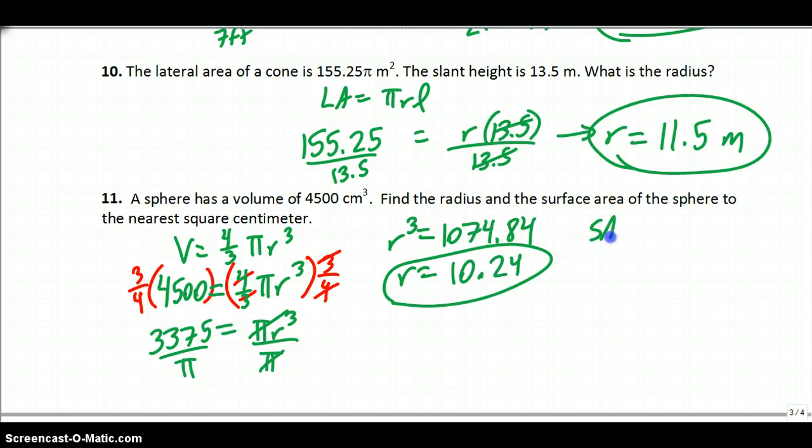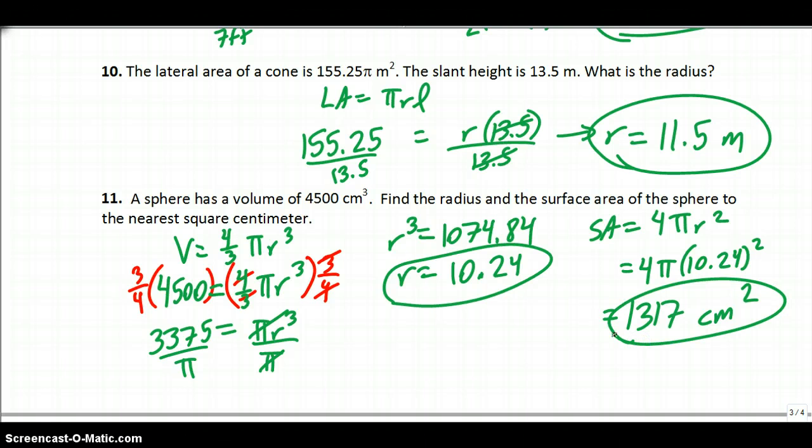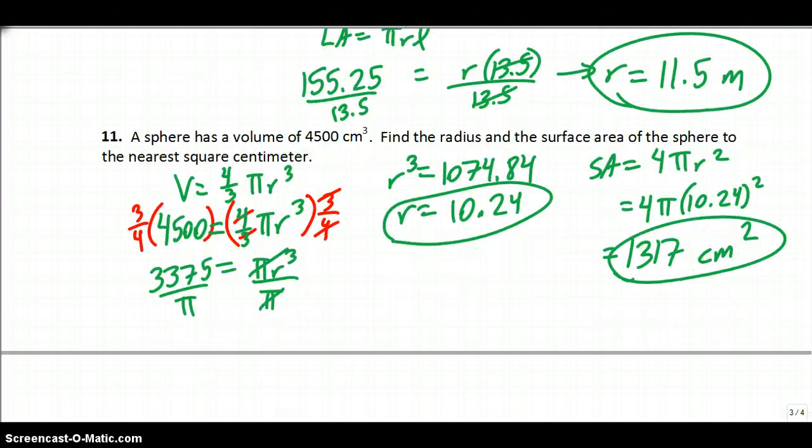Now we just need surface area, which is really simple. It's just 4 pi R squared. So 4 pi, you plug in the R, and then you multiply away. It says round to the nearest square centimeters, so nearest whole number, basically. So you just plug this in a calculator, and you get 1,317 square centimeters because this is area. The largest part about this is the cube root, so make sure you can do that.